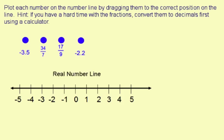The first number is negative 3.5. That one's pretty easy. It goes halfway between negative 3 and negative 4, so right there. And label it negative 3.5.